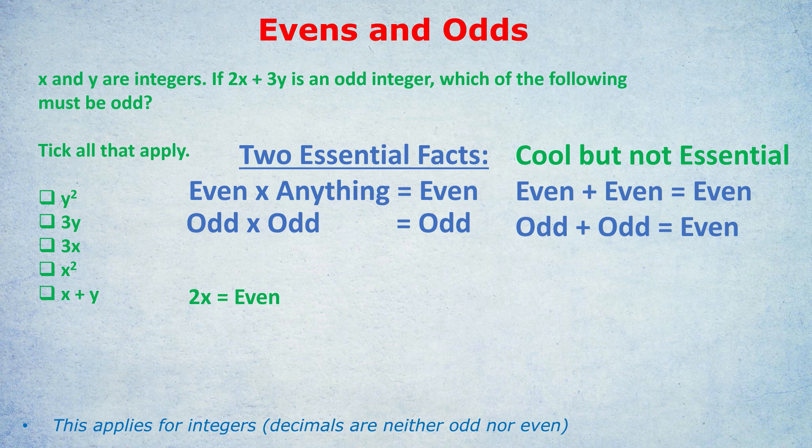This gives us the following equation: even plus 3Y equals odd. Why did I turn it into an equation? Because of the word 'is' — 2X plus 3Y is an odd integer, and 'is' means equals in maths. Notice I replaced 2X with simply the word 'even' — I don't care about the details of 2X, just that 2X is even.